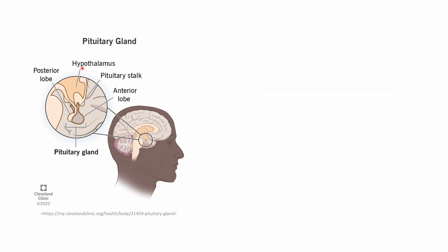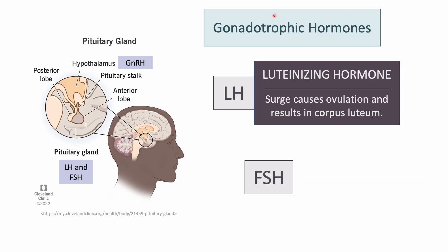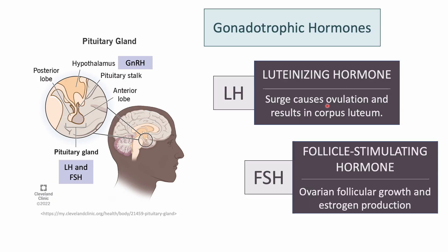The menstrual cycle really centers around hormonal regulation. The hypothalamus signals to the pituitary via GnRH, or gonadotropin-releasing hormone, that it's time to release hormones, and the pituitary releases, in turn, LH and FSH, which are luteinizing hormone and follicle-stimulating hormone. LH, or luteinizing hormone, causes ovulation, and FSH signals to the ovary to begin producing estrogen and stimulates follicular growth.